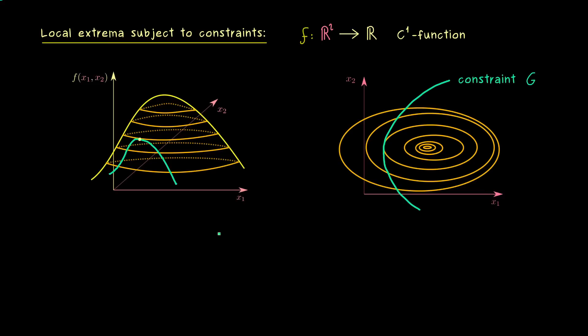So we want to be able to calculate this local extremum we find for this new function. But before we do that, we first should formulate everything in a formal definition. We will say that we have a local extremum of f subject to a given constraint, and this constraint will be formulated as a function lowercase g of x is equal to 0.